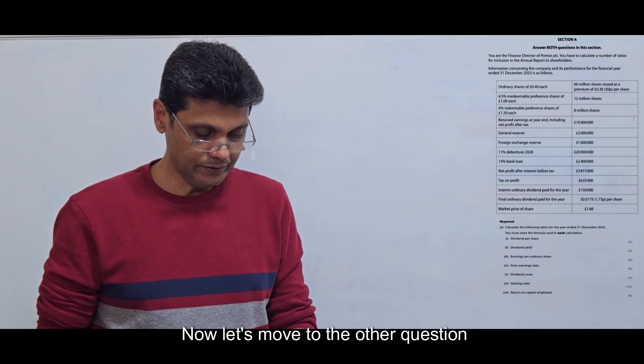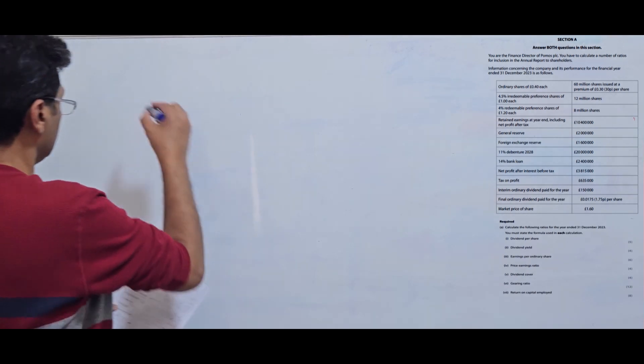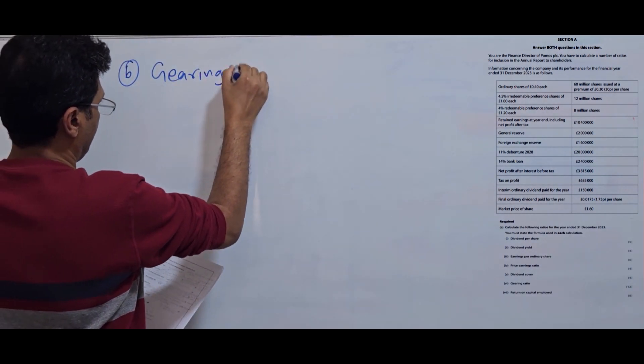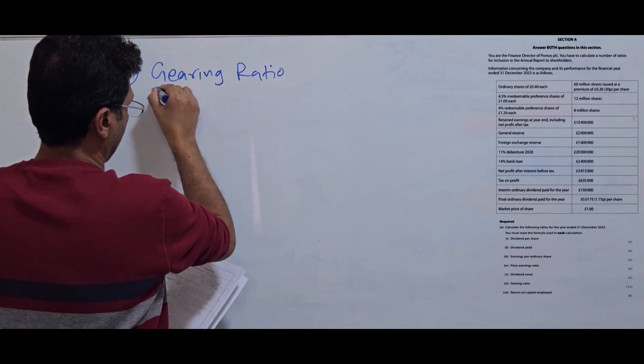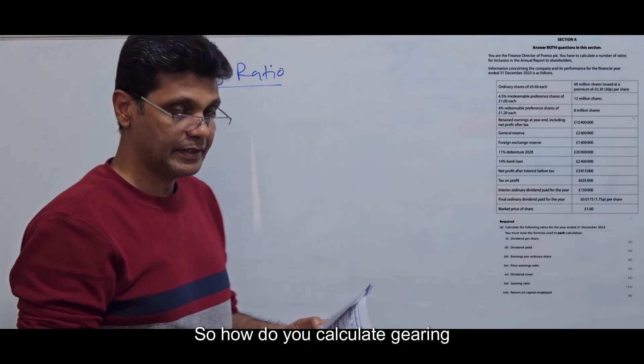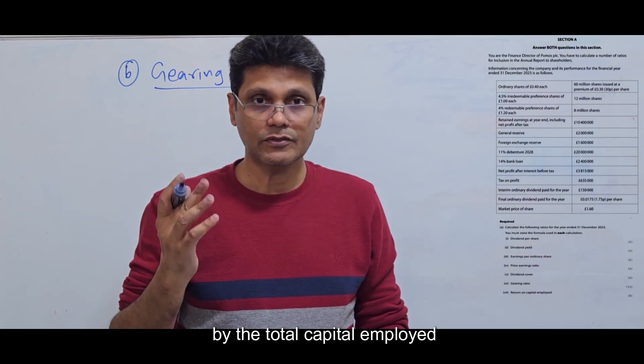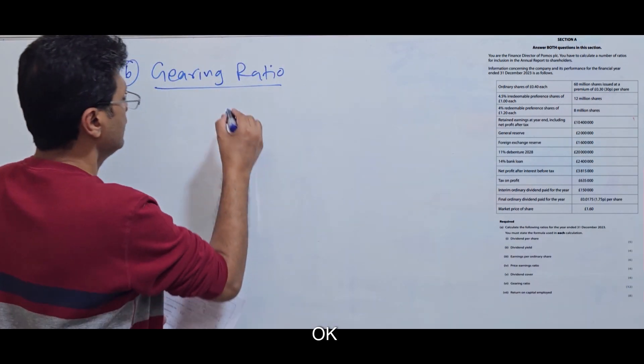Okay, now let's go to the other question: gearing ratio. So how do you calculate gearing ratio? It's the total debt divided by the total capital employed.